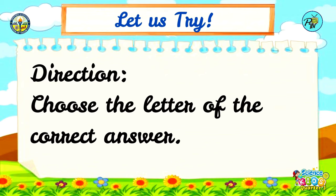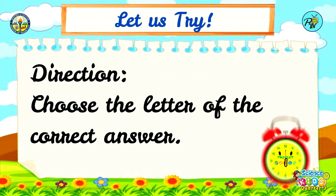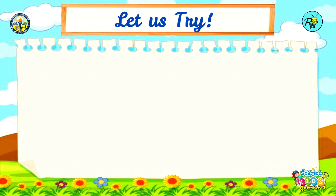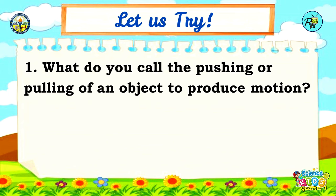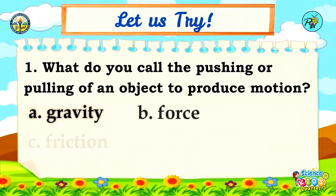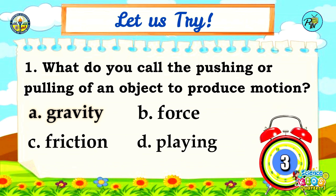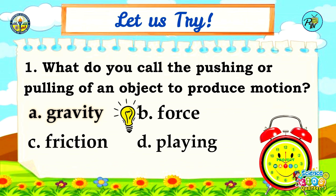Choose the letter of the correct answer. You will be given 5 seconds to answer each question. Let's begin! Number 1: What do you call the pushing or pulling of an object to produce motion? A. Gravity, B. Force, C. Friction, D. Playing. Time is up! The correct answer is letter B — Force.